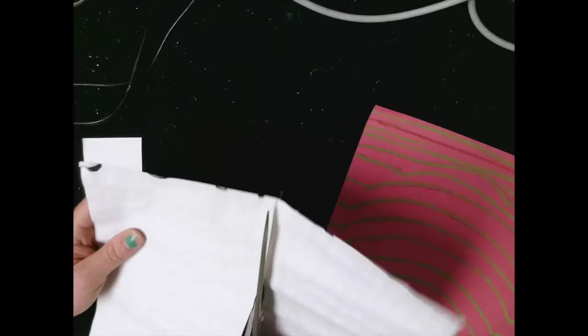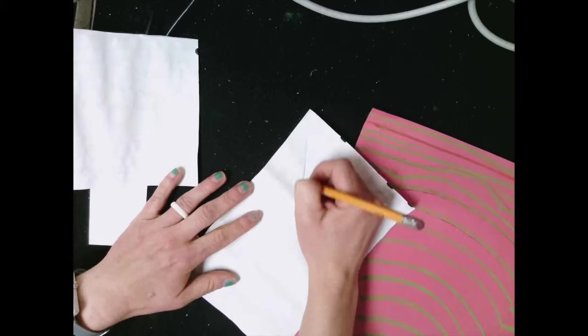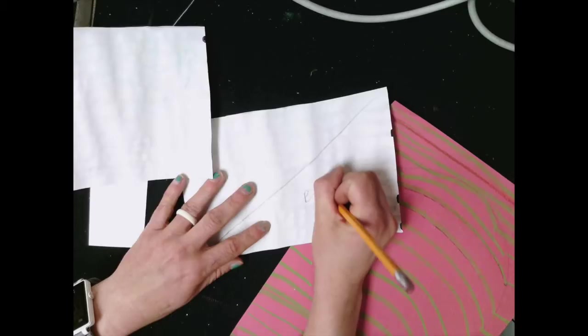take one of the rectangles and draw a diagonal line across. This line will divide this for the body, and the second rectangular triangle is just some extra paper left over.